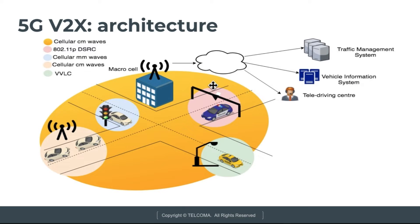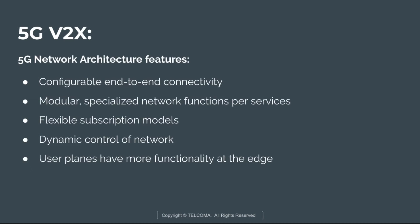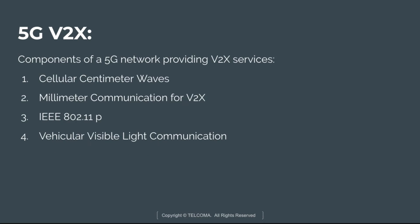Now let's discuss the features of 5G network architecture. It is configurable to end-to-end connectivity, providing end-to-end connectivity using a variety of technologies like 802.11p and Cellular V2X. It also offers modular specialized network functions per service, flexible subscription models, dynamic control of the network, and more functionality at the user plane edge.